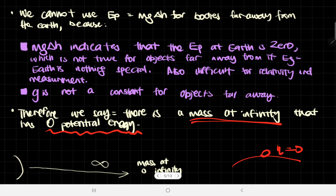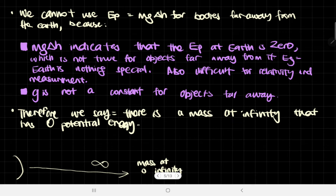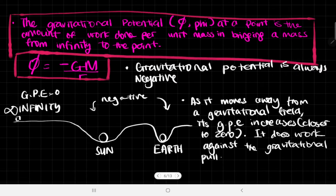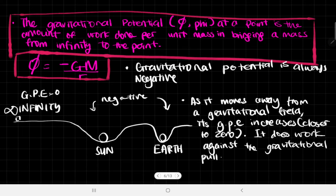So now that this is the rule, we can talk about the gravitational potential, which is phi — the Greek letter phi. It is the amount of work done per unit mass in bringing a mass from infinity to the point.